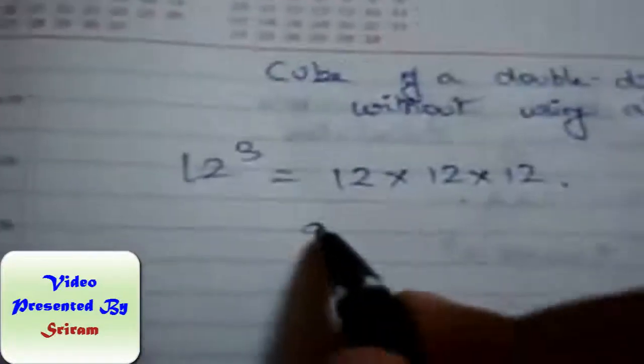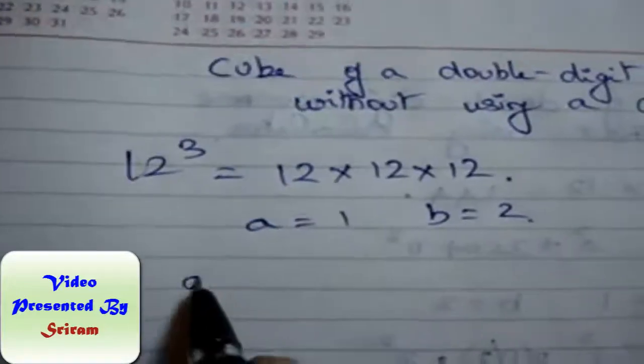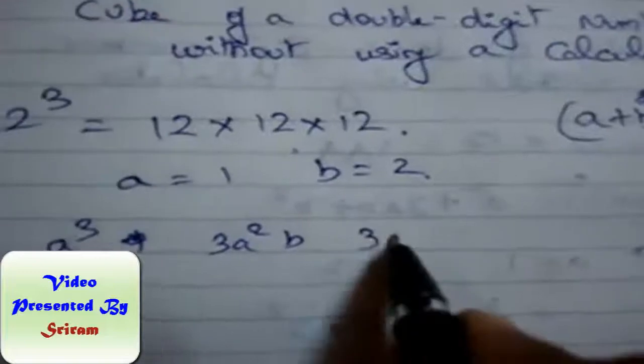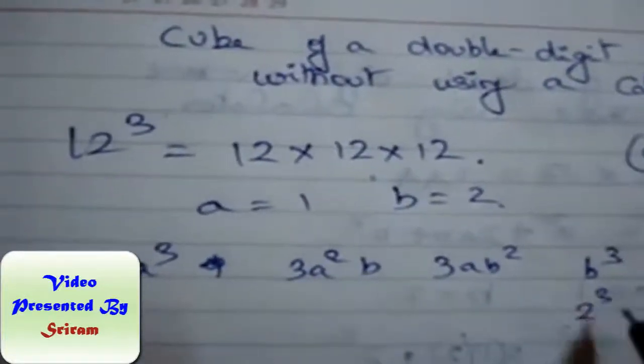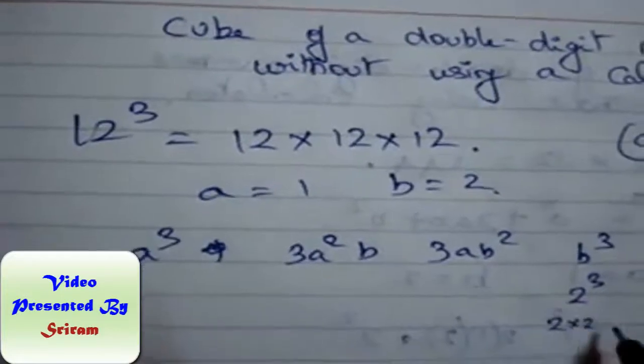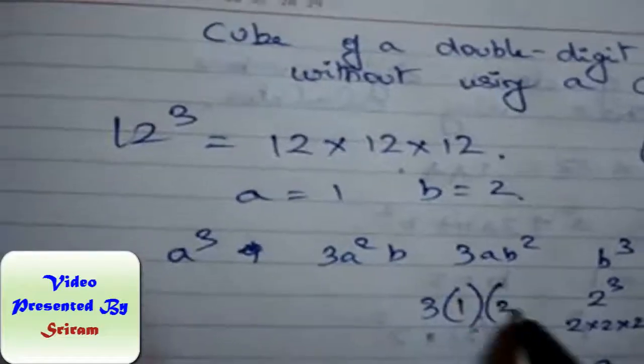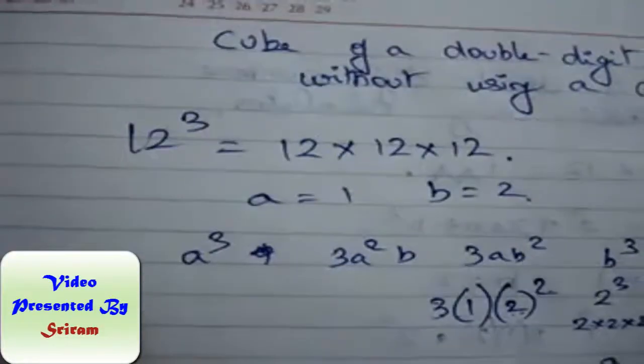Right, here a is equal to 1, b is equal to 2. So a³, 3a²b, 3ab², b³. b³ is 2³, that is 2 into 2 is 4, into 2 is 8. 3 into a into b², that is 4, so 3 is 12.